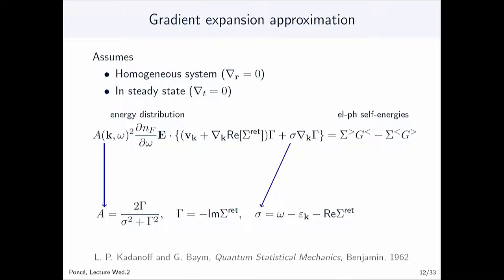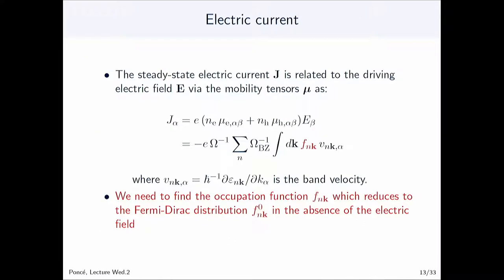Two approximations we can do: first, consider that the electric field is homogeneous — no variation with position; second, consider steady state with a constant electric field. Doing those two approximations, you can simplify the expression and get what is called the gradient expansion approximation. You get a rather complicated equation involving the spectral function, which depends on the imaginary part of the retarded electron-phonon self-energy, and the quasi-particle renormalization, which depends on the real part. This is still quite difficult to solve, so we want to simplify even more.